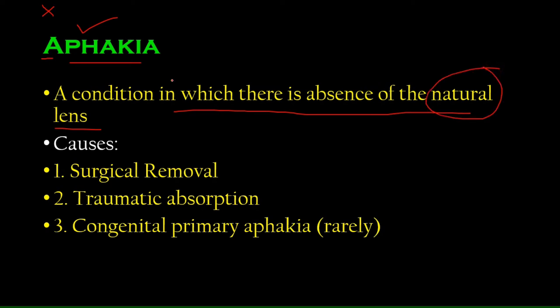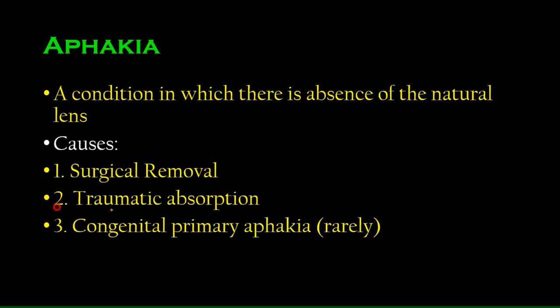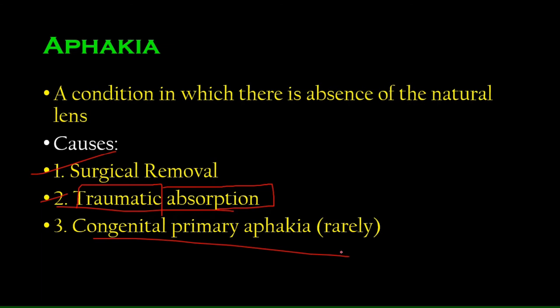What could be the cause of a guy having no lens? The most probable cause is surgical removal — you remove part of your lens during cataract surgery. Another condition called traumatic absorption could also lead to having no lens: a trauma directly to the lens, like a sharp object that penetrates the eye and shatters the capsule. And there is congenital primary aphakia, where the baby is born without a lens at all, though this is very, very rare.